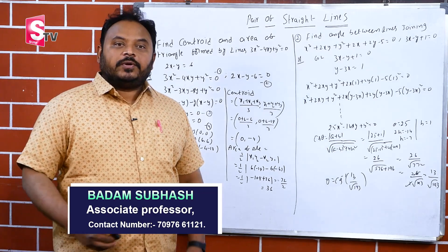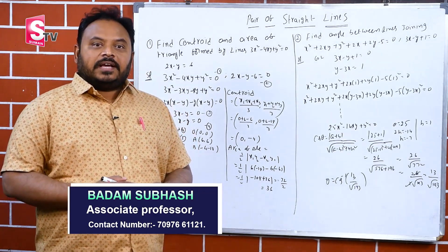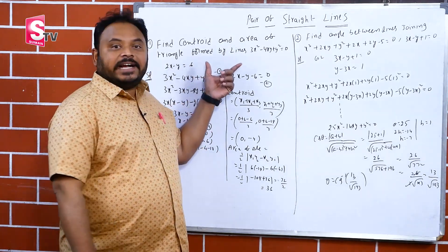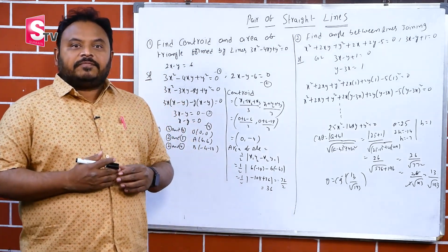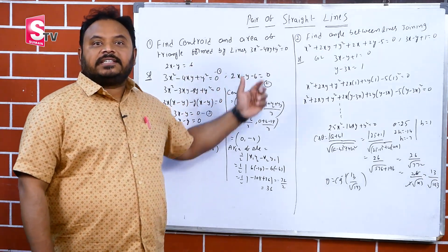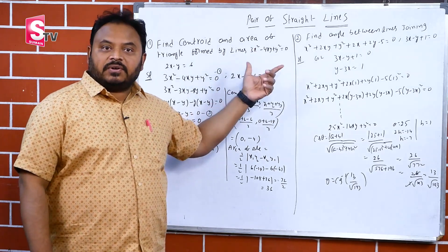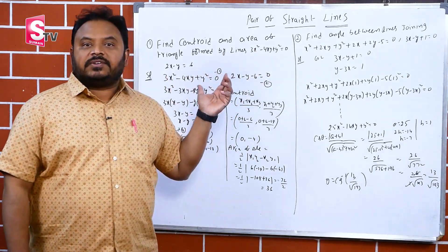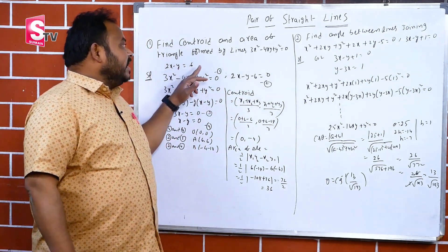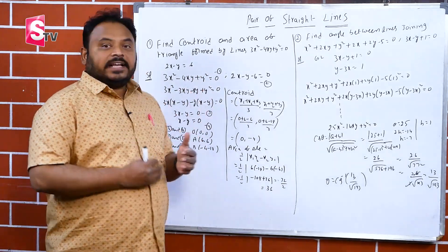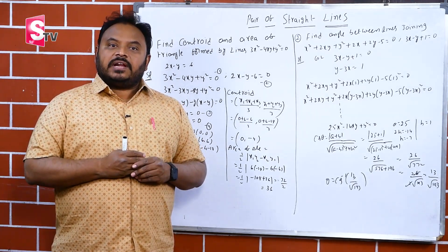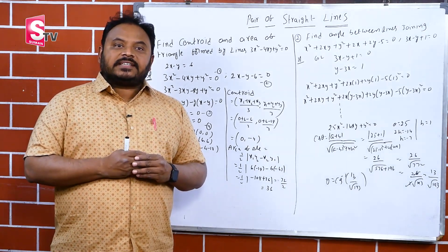Hi, this is Subash. Today I am going to talk about the pair of straight lines, a first-year topic. This is a 14-mark valuable chapter. We need to find the centroid and area of the triangle formed by the combined equation of lines and a given straight line.